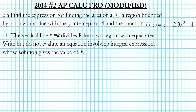Let's take a look at this problem. It was extracted from the 2014 AP Calculus free response questions. I made a slight modification — Part B is the problem that was presented in the AP exam, but I added Part A to help you see how to set up the initial situation. Part A asks you to find the expression for the area of region R, bounded by a horizontal line with y-intercept of 4 and the function f(x) = x⁴ − 2.3x³ + 4.